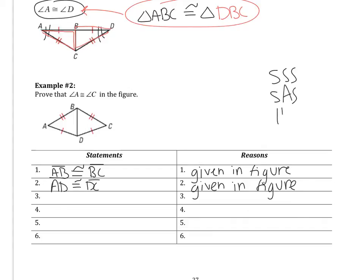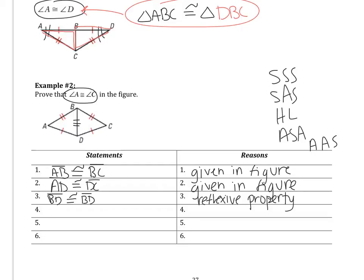The ways we know to prove congruency are SSS, SAS, HL, ASA, and AAS. We do not know that A and C are congruent — that's what we're trying to prove, so we cannot use that. We do know that BD is congruent to itself by the reflexive property. Now we have three pairs of sides congruent — that's SSS.